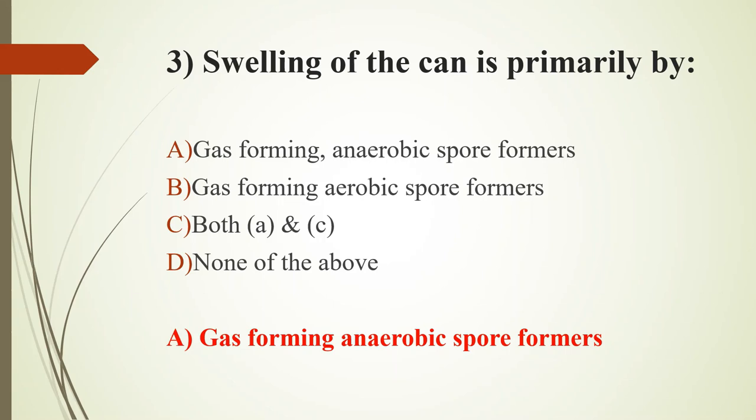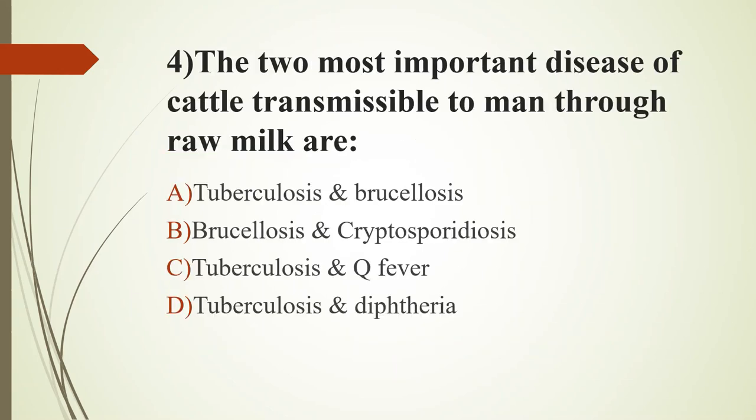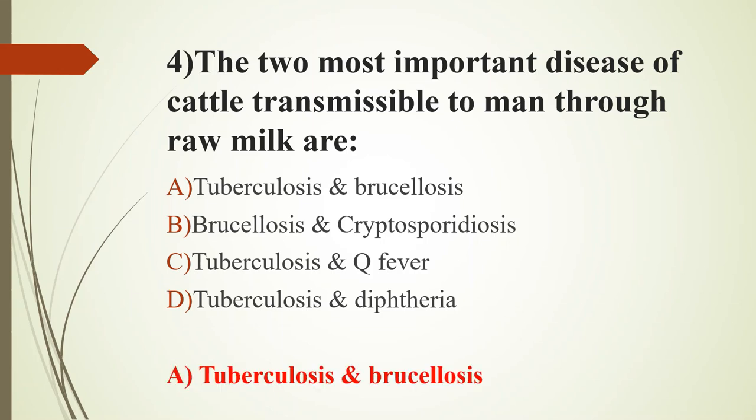Fourth question: the two most important diseases of cattle transmissible to humans through raw milk are — option A, tuberculosis and brucellosis; option B, brucellosis and cryptosporidiosis; option C, tuberculosis and Q fever; option D, tuberculosis and diphtheria. The answer is option A, tuberculosis and brucellosis.